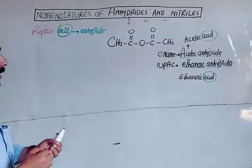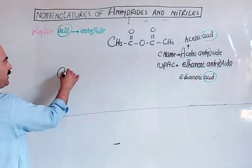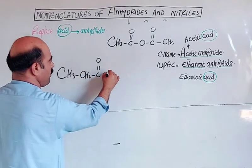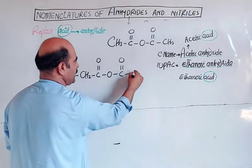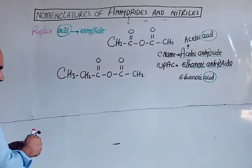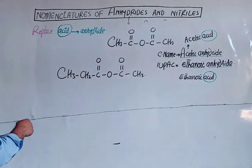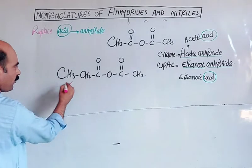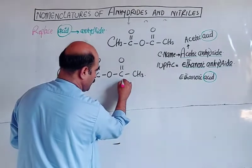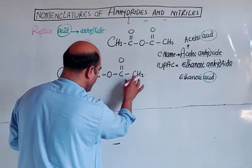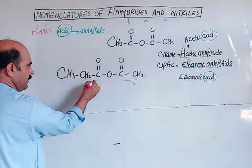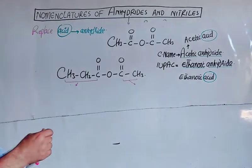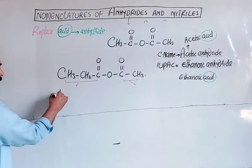For a mixed anhydride example: CH3CH2-CO-O-CO-CH3. The three-carbon portion is propionic acid, and the two-carbon portion is ethanoic acid. This is a combination forming an anhydride of propionic acid and ethanoic acid — a mixed anhydride.